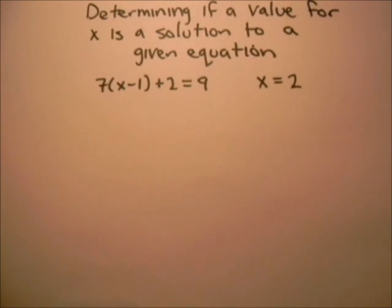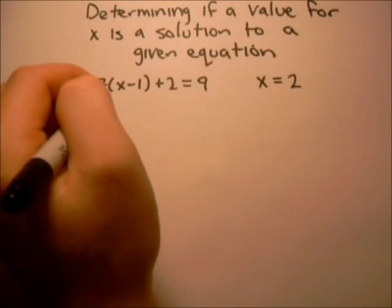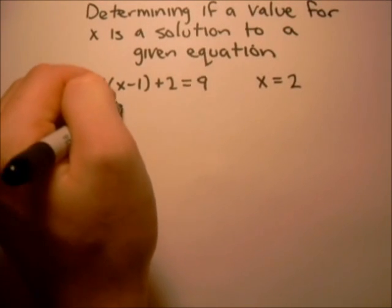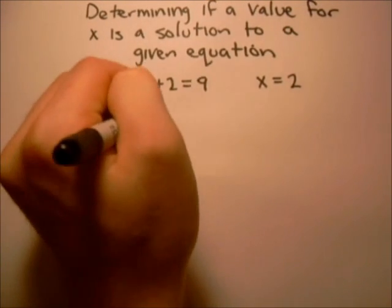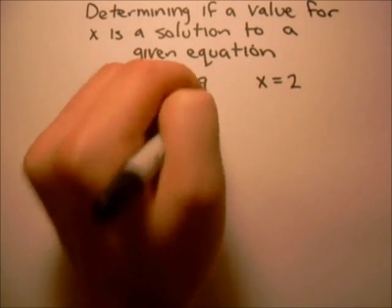So in this case, where we have x equals 2, what we can do is just plug in 2 for x. So we'll get 7 times 2 minus 1 plus 2 equals 9.